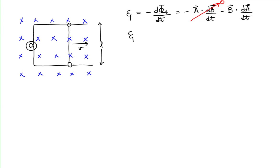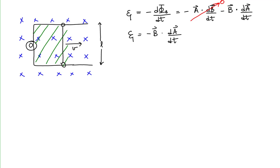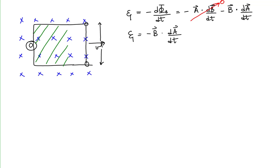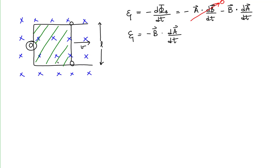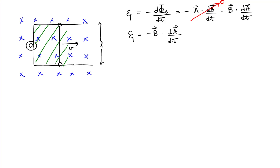This means the EMF can only be due to the time rate of change of the area — specifically the effective area through which the magnetic flux is changing. As the wire slides to the right at speed v, the area bounded by the wire and the rest of the circuit increases at a constant rate, causing the circuit loop to enclose more and more magnetic field lines.